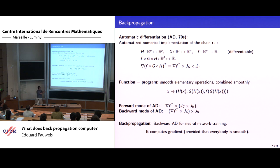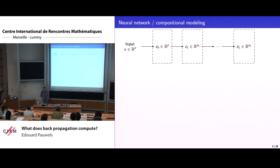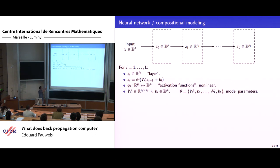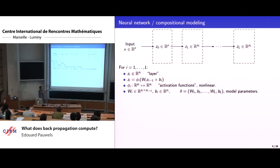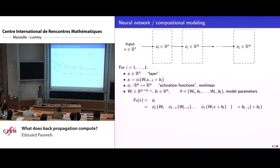Everything here stands provided that all the elementary steps are smooth — at least differentiable. So let's fix the notation regarding neural nets. They are organized in layers with a nice compositional structure. The connection between consecutive layers is through a composition of an affine map and a non-linear activation function, often applied coordinate-wise. If I collect all the weights of the affine maps in a big vector theta, I have a parametrized set of functions.